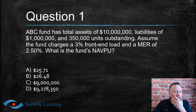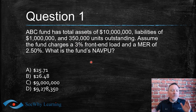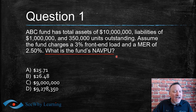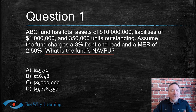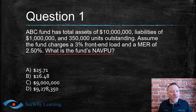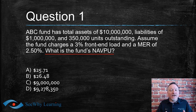This question has a lot of moving parts — a 3% front-end load, an MER of 2.5%, assets, liabilities, units. Remember: RTQF — read the question first. The question asks for the fund's net asset value per unit. The front-end load and MER are distractors we don't need. We simply need to focus on value per unit — that's what the question is really asking.